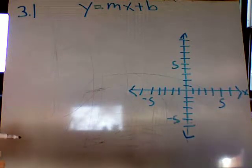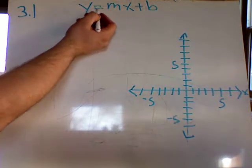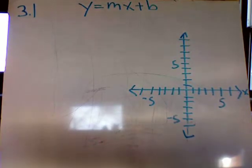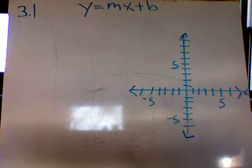All right, let's say we have an equation that looks like this, y equals mx plus b. Well, we said before that that is a linear equation. That means that that's a straight line.